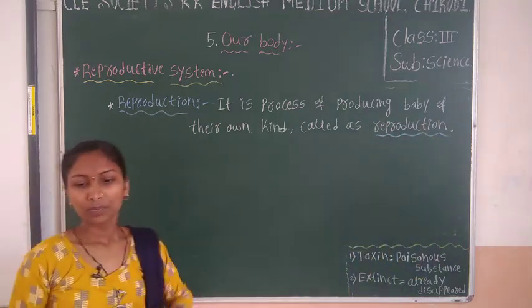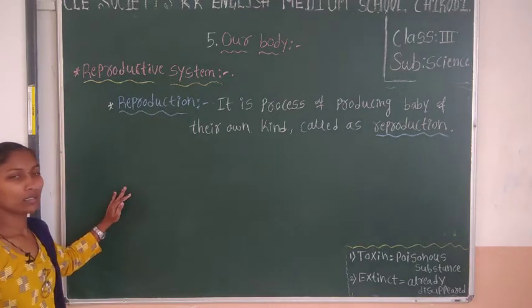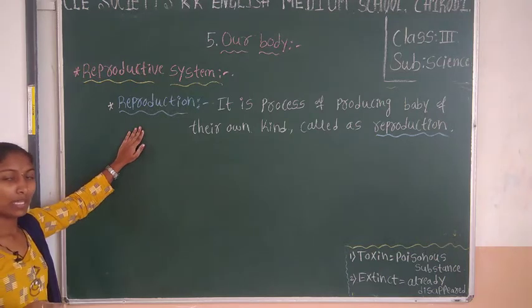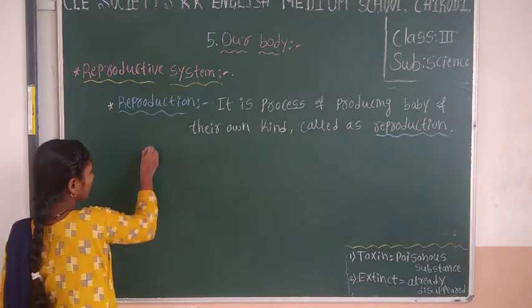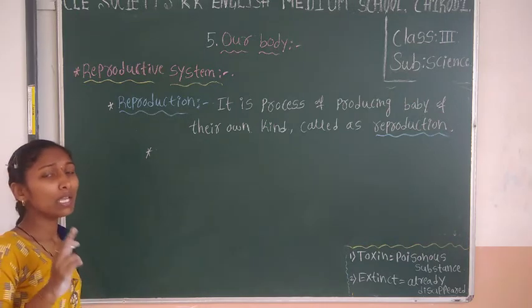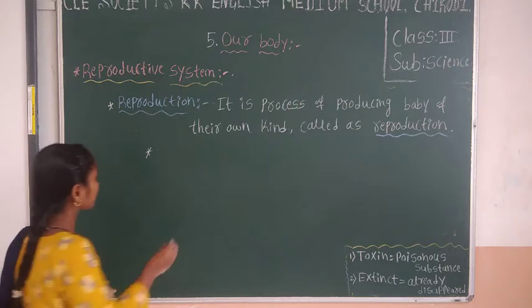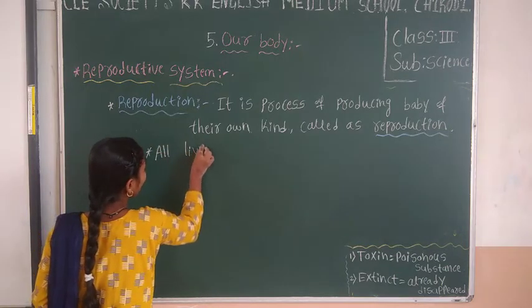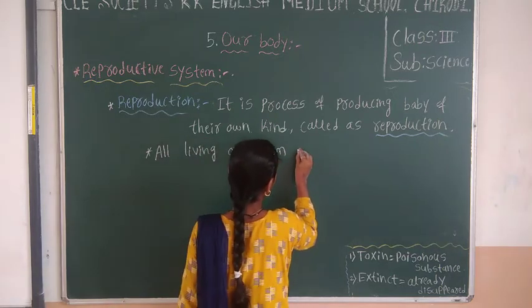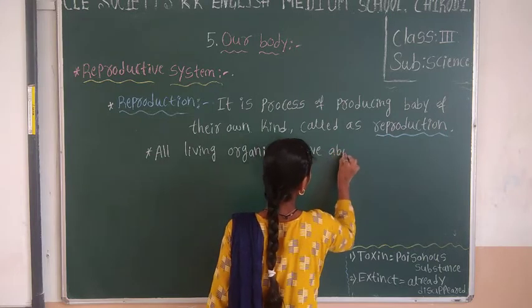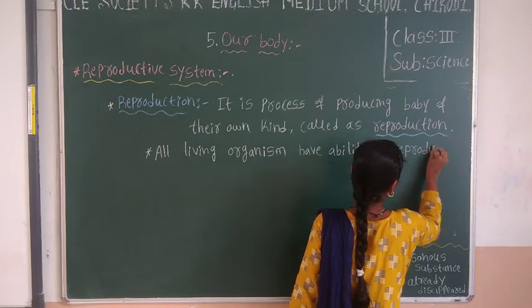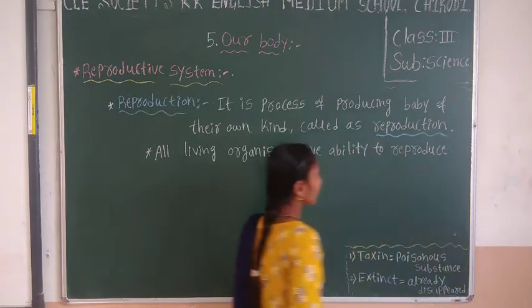After knowing the definition of reproduction — every living organism reproduces. Not only do they reproduce? Non-living things do not reproduce. Only living things reproduce and produce their baby. All living organisms have the ability to reproduce and give birth to their own kind.